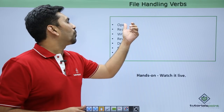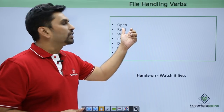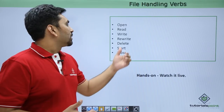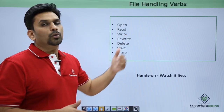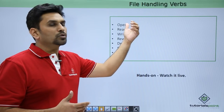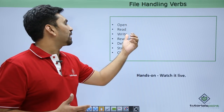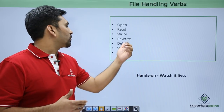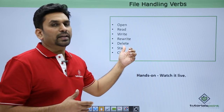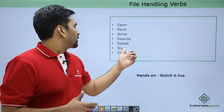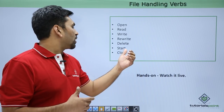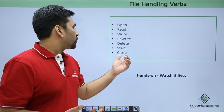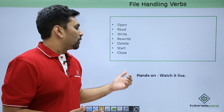These are the file handling verbs. Before using a file you must perform certain operations: first you need to open the file, then read the file if you want to read and display it. If you want to write the file, open it and then write directly. If you want to update a record that is rewrite, you can delete any record, use start to begin browsing, then close the file.